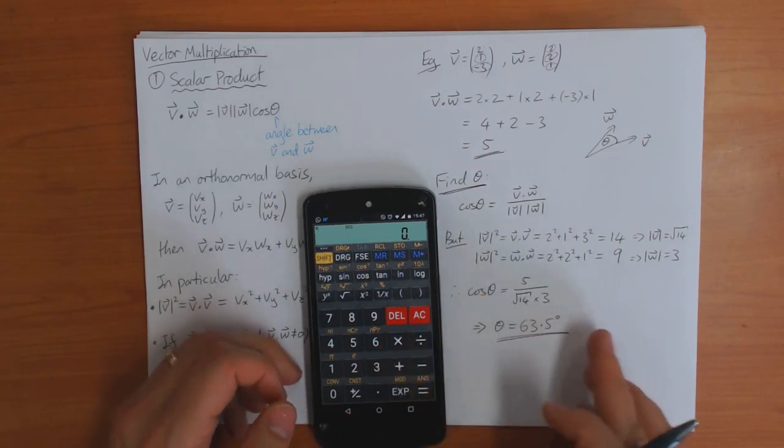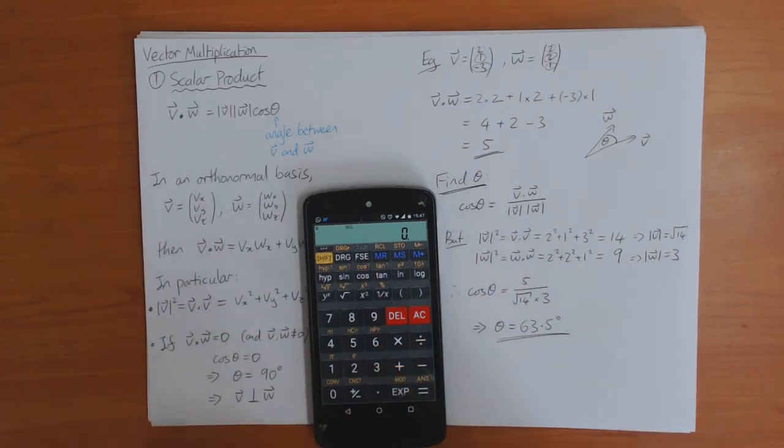So that's the end of this video on the scalar product. In the next video, I'm going to define something called the vector product, which is another way you can multiply vectors together.